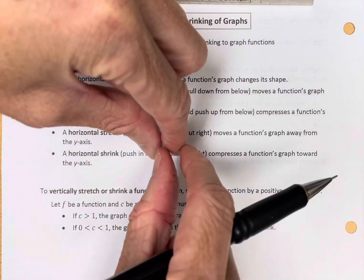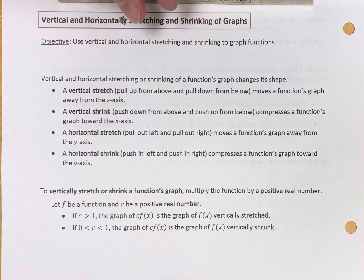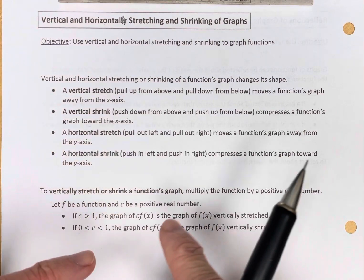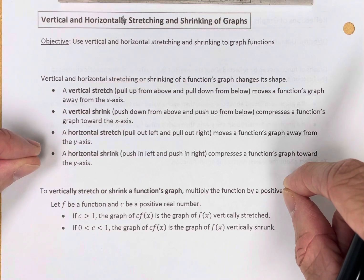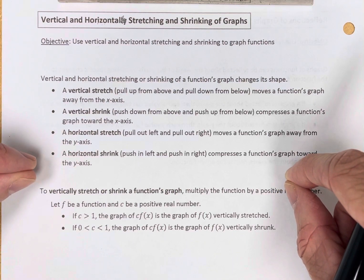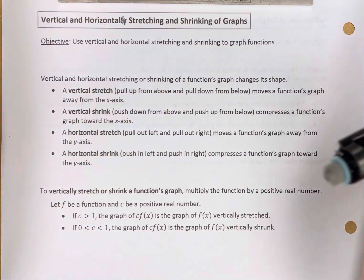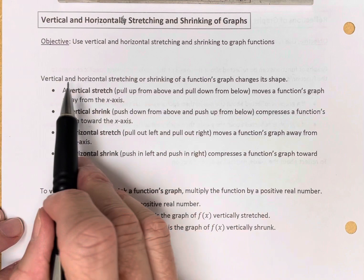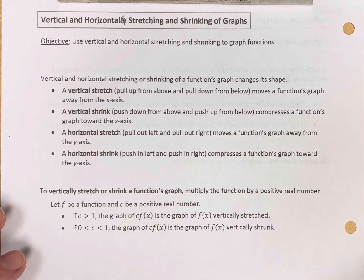Vertical stretching means pulling a graph up without changing the x-intercepts, or pushing a graph in — again, not changing the x-intercepts. Horizontal stretching changes the x-intercepts but not the maxes and minimums, while horizontal shrinking — pushing in from the sides — also changes x-intercepts but preserves the maxes and minimums. Vertical and horizontal stretching or shrinking of a function's graph changes its shape.